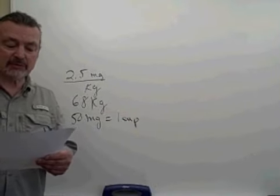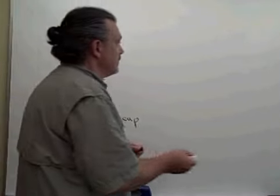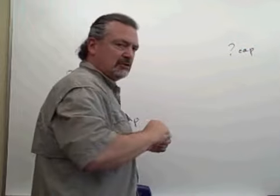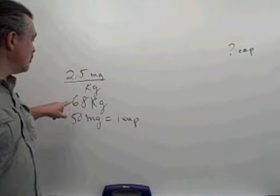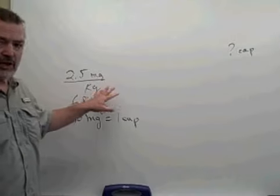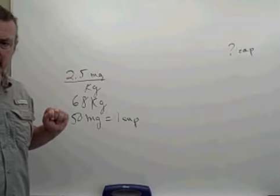How many capsules would you administer to the patient? So we want to know how many capsules should this patient who weighs 68 kilograms receive? And this drug is based upon the patient's weight. They should get 2.5 milligrams per kilogram.